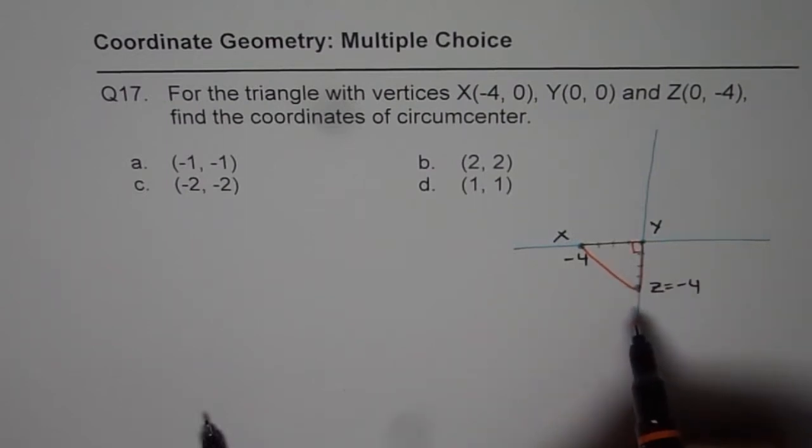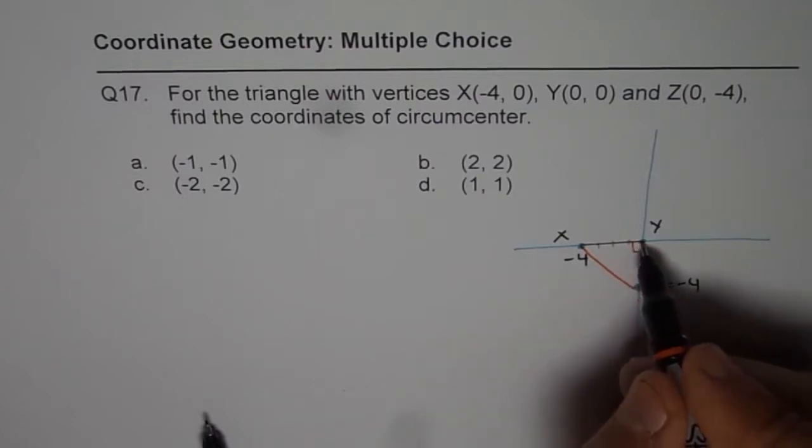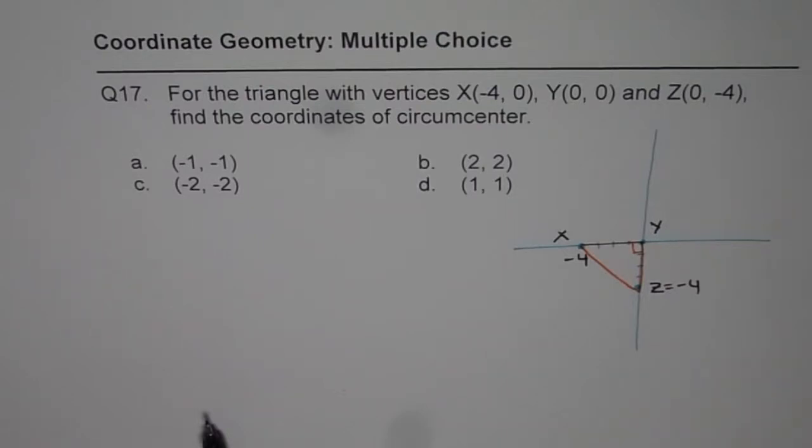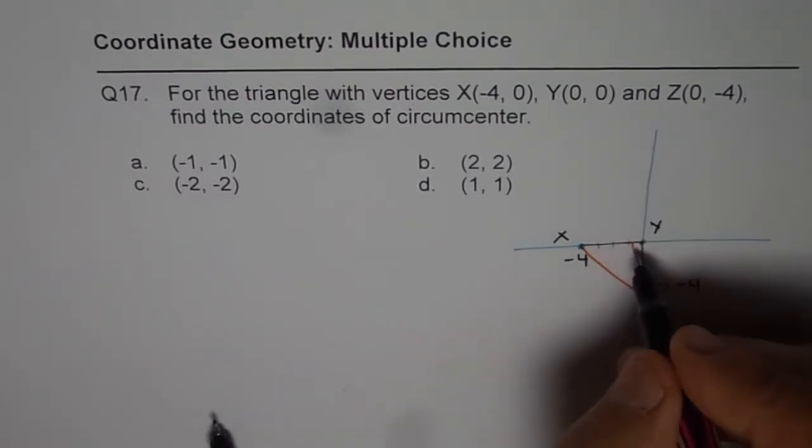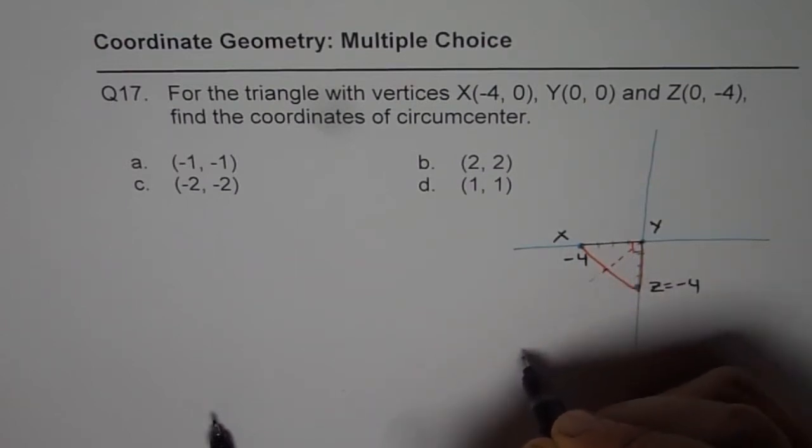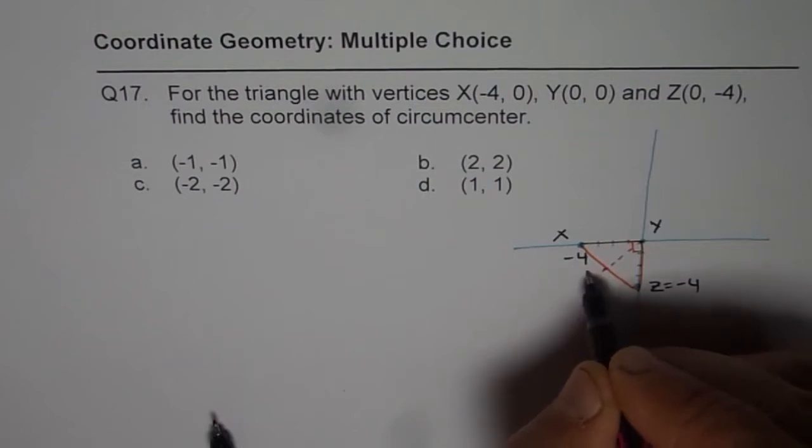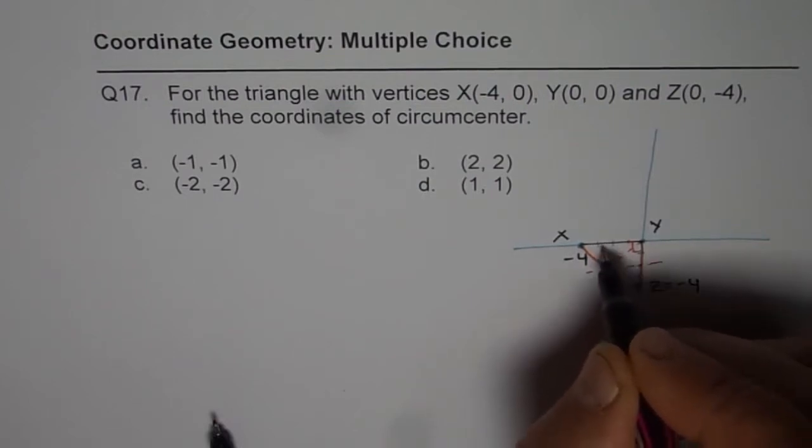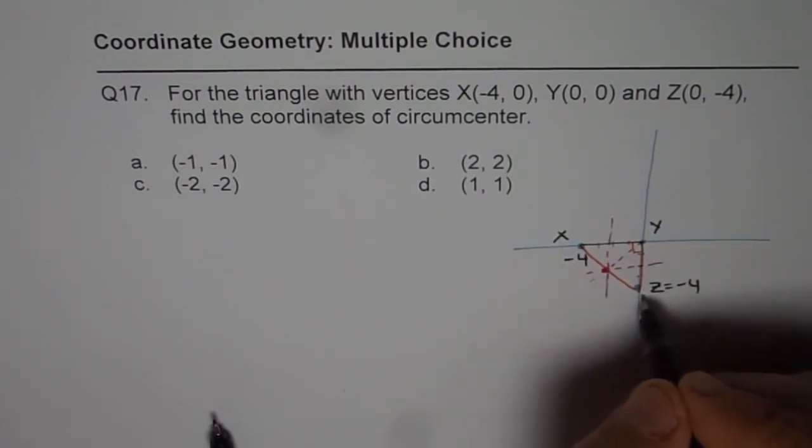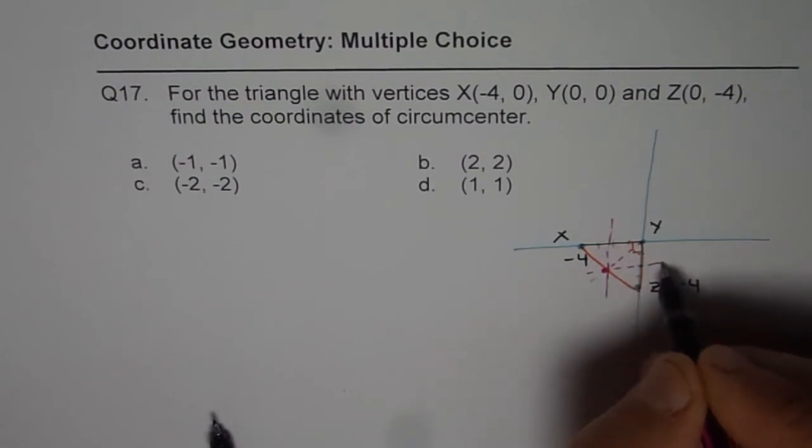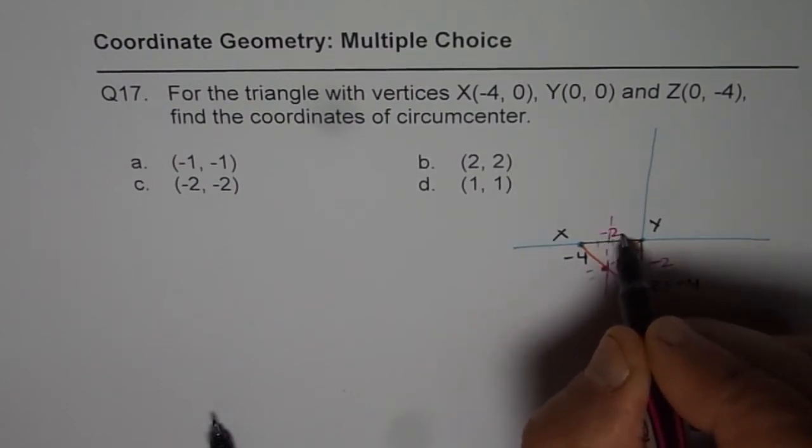In a right triangle, where is the circumcenter? Circumcenter is a point which is on right bisectors of each side. So when you do that, then the right bisector of this side will go through the center like this. Right bisector of this side will be kind of like this, and for this side, it will be like this. So you will notice that it is the center point of the hypotenuse, and therefore the point is (-2, -2).